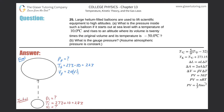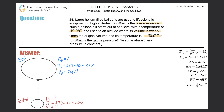Problem 25: Large helium-filled balloons are used to lift scientific equipment to high altitudes. Part A — what is the pressure inside such a balloon if it starts out at sea level with a temperature of 10 degrees Celsius, rises to an altitude where its volume is 20 times the original, and its temperature is negative 50 degrees Celsius? We have initial conditions at sea level: the initial temperature is 10°C, which we convert to Kelvin by adding 273.